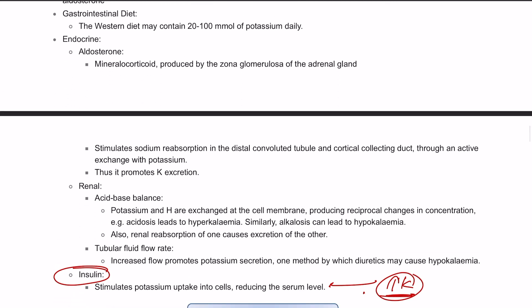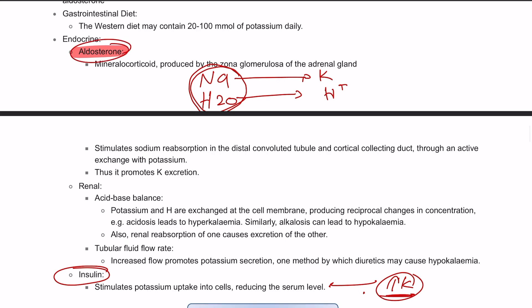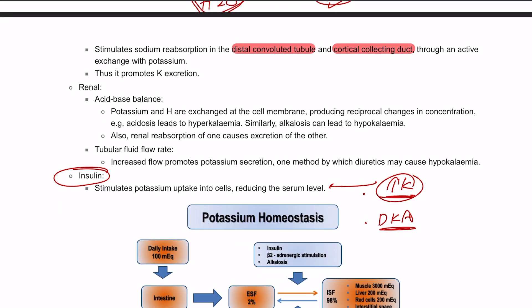There is also aldosterone production. Aldosterone is responsible for salt and water retention, but in the body we cannot retain anything without an exchange. For sodium and water retention, in return we excrete potassium and hydrogen. That is why aldosterone can lead to paradoxical aciduria due to increasing the amount of hydrogen in the urine. This works on the distal convoluted tubule and the collecting duct of the nephron. So potassium and hydrogen are excreted in exchange for salt and water, meaning acidosis can lead to hyperkalemia and alkalosis can lead to hypokalemia.